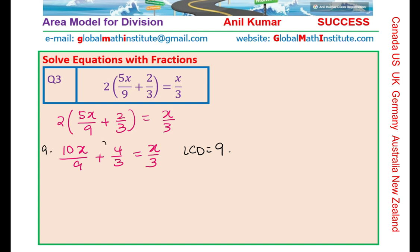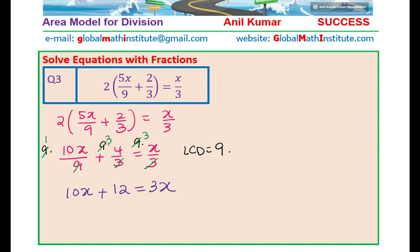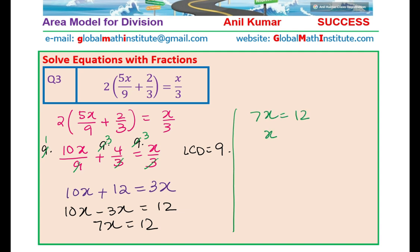Multiplying each term by 9: 9 and 9 cancel giving 10x; 9 goes 3 times into 3, so 3 times 4 is 12; and 3 times x is 3x. So we have 10x plus 12 equals 3x. Bringing x's together: 10x minus 3x equals 12, giving 7x equals 12. Therefore x equals 12 over 7.